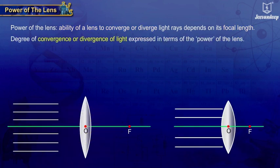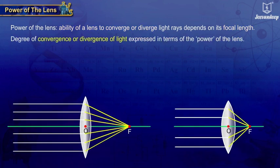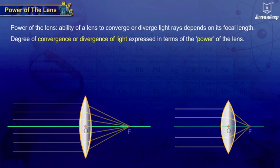The degree of convergence or divergence of light rays achieved by a lens is expressed in terms of the power of the lens.